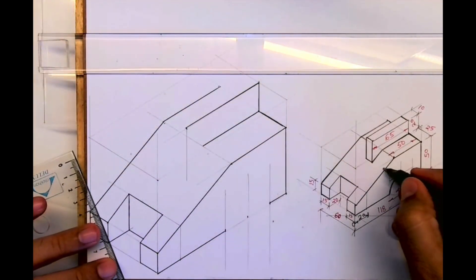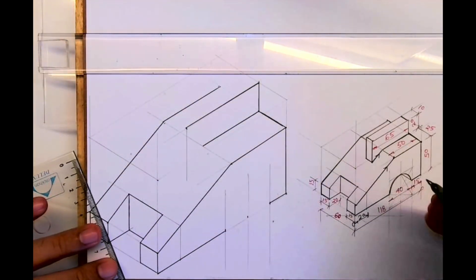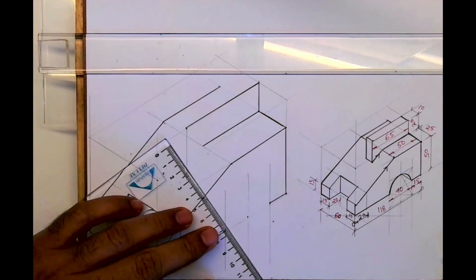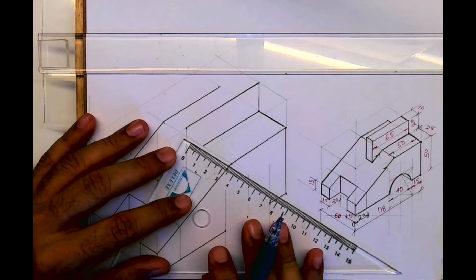Then you draw a line from here. Now we don't know this height, but we know that this is parallel. Always remember, on the slope it will be parallel, so we need to draw a parallel line.